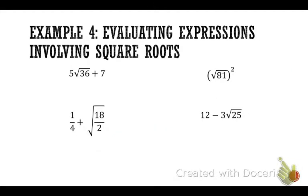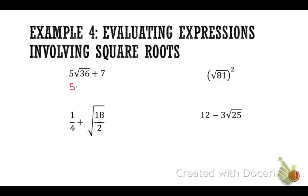Next, we're going to start evaluating expressions — order of operations is going to be important. We want to evaluate the square root first. Nobody wants to do 5 times the square root of 36 before taking the square root. When there's no symbol between the 5 and the radical, that means multiplication. So take the square root of 36 first — that's 6. Then 5 times 6 plus 7: what's 5 times 6? 30. 30 plus 7? 37.